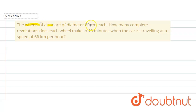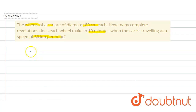In the given question, the wheels of a car are of diameter 80 centimeter, and we have to find how many complete revolutions does each wheel make in 10 minutes when the car is traveling at a speed of 66 kilometer per hour. It is given that the diameter of the wheel, which is in the form of a circle, is equal to 80 centimeter.